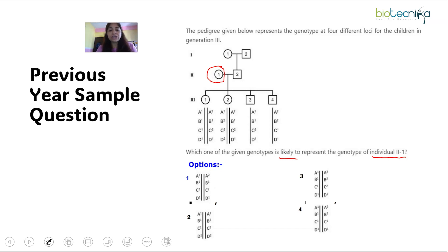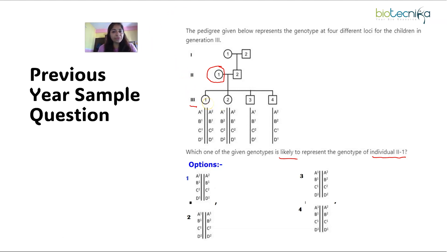In the third generation, the children are clearly children of 2-1 and 2-2. The circle means female, square means male. Now in the circles there are two chromosomes — each line represents one chromosome, so two lines means two homologous chromosomes. We know they are homologous because the same gene loci are present in the same order. So 3-1 and 3-2, who are females, have two homologous chromosomes, whereas 3-3 and 3-4 are males.